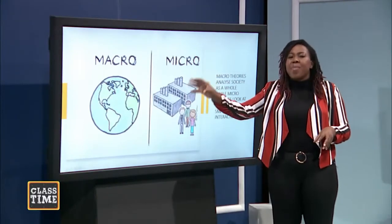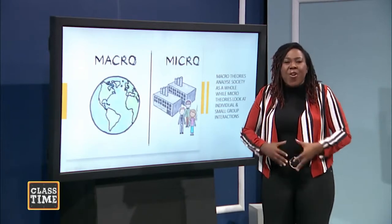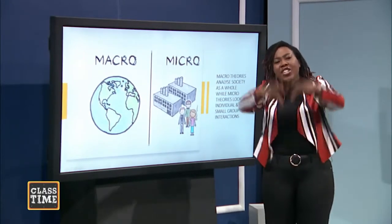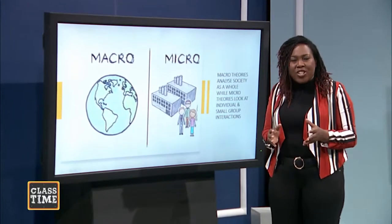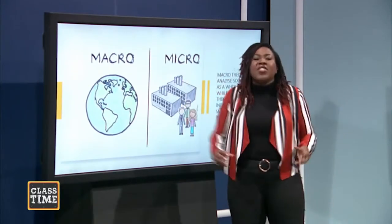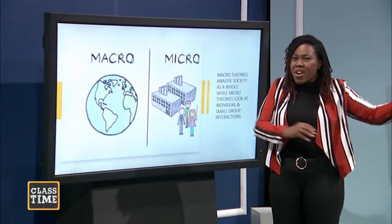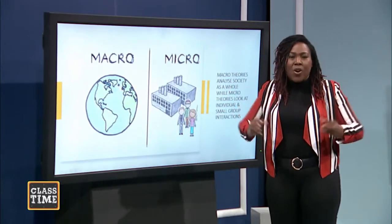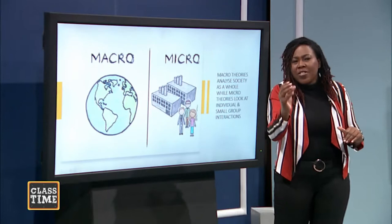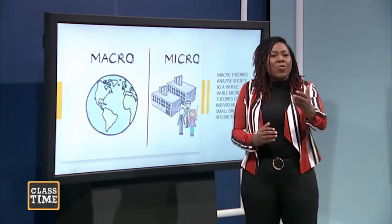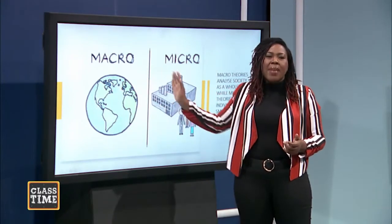The functionalist and the Marxist are macro, whereas the interactionists are micro. It means that the interactionists, when they're going to explain society, instead of looking at general society, they start looking at the individuals and small group interaction. So they don't just look at the family in general — they're looking at the individuals in the family. Whereas the functionalists and the Marxists would be looking at the family in general, or religion in general, or the entire society. So remember: macro, micro. Write it down.